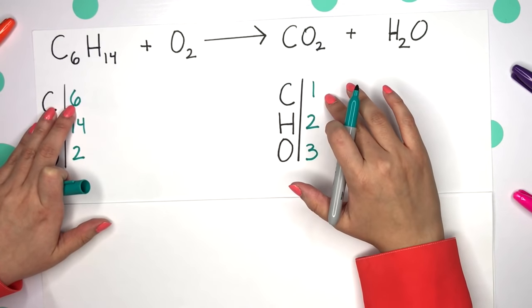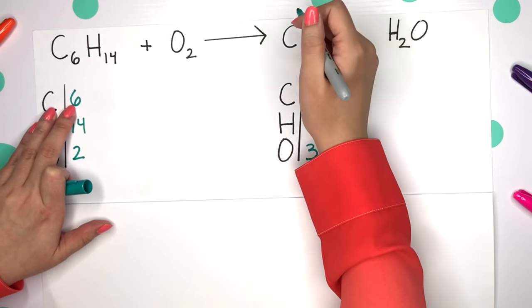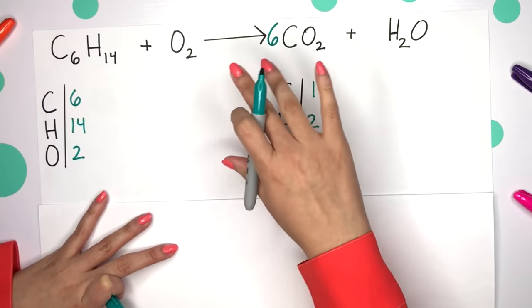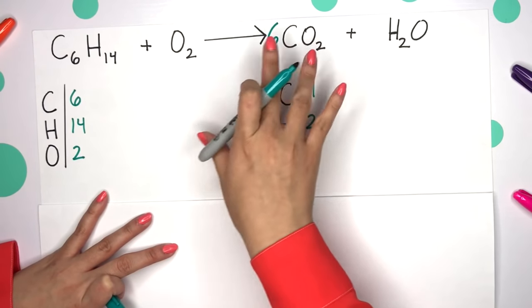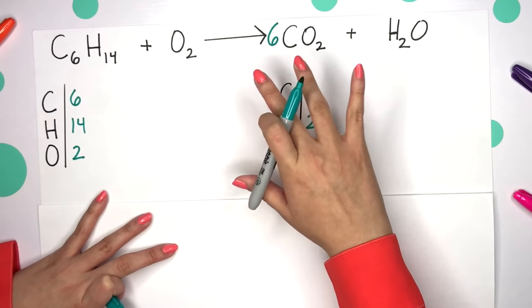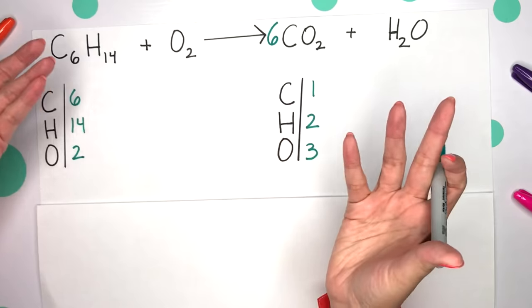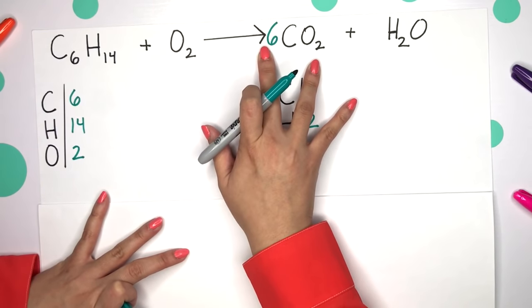There's six here, one on the product side. So we need six carbons on our product side. I'm going to place a six in front of this CO2. And remember, you can't put a six right in the middle of our CO2 compound. We actually have to keep it together since it is a compound.